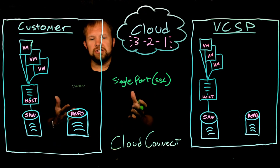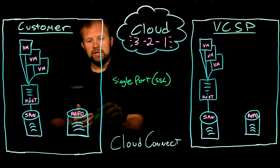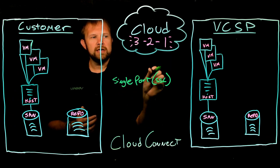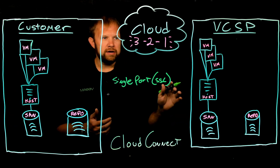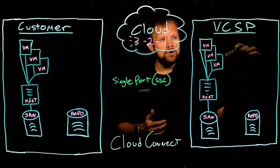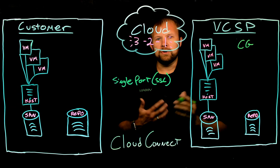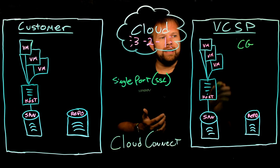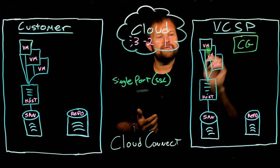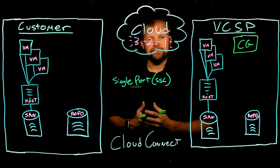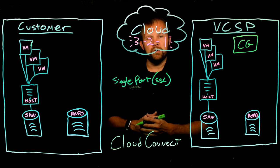Once this connection is established, the data flow leaves the on-site repository via this single port and establishes the SSL connection with the VCSP. On the provider side, you'll have a component known as a cloud gateway — I'll abbreviate that CG. This is a Veeam component that accepts inbound traffic from the internet and serves as the ingress point into the provider's data center.